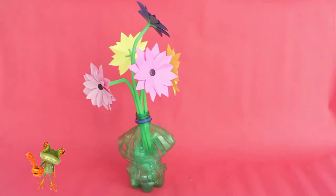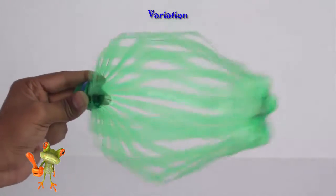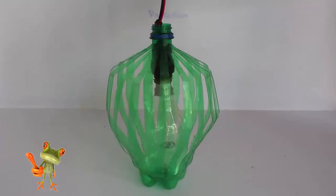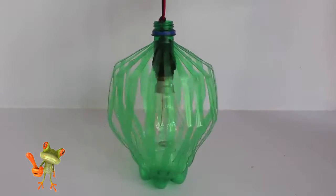Now you can untwist the bottle and this shape will make a very nice lamp shade.